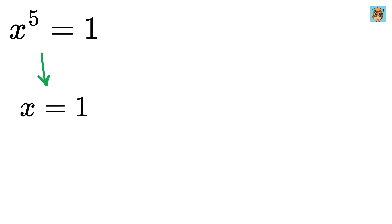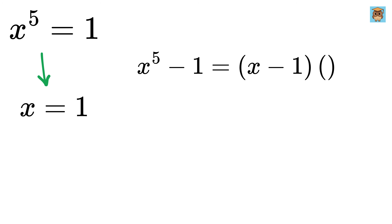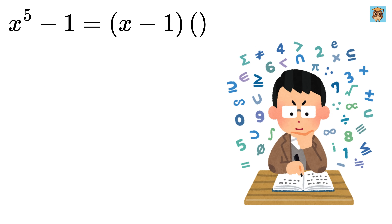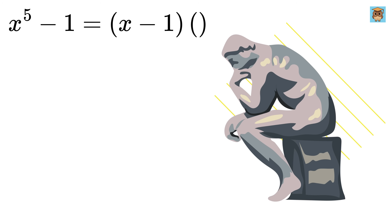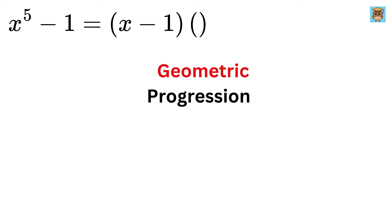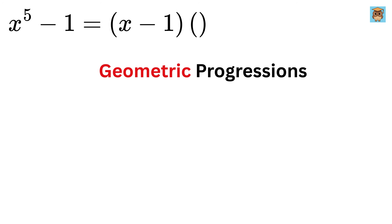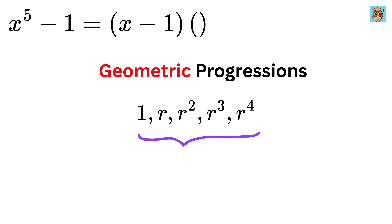Because x equals 1 is a solution to this equation, we can rewrite x raised to 5 minus 1 as (x minus 1) times something, and that something will be a quartic polynomial with a power of 4. Math is about finding smart and easy ways to solve problems. Do you know about geometric progressions — sequences where each term is multiplied by the same number? For example: 1, r, r², r³, r⁴ is a geometric sequence with common ratio r.